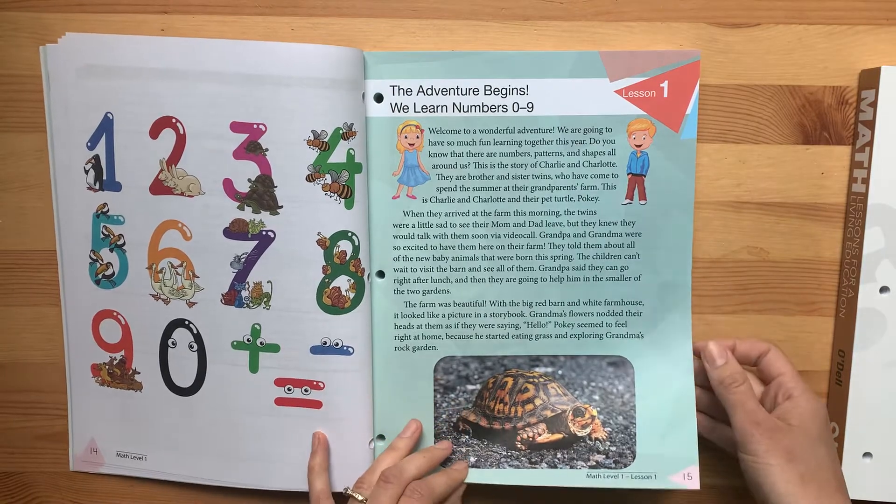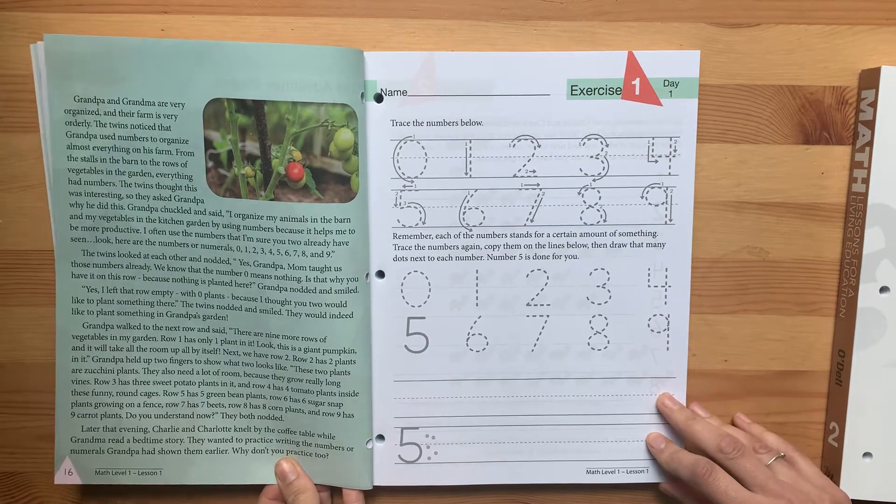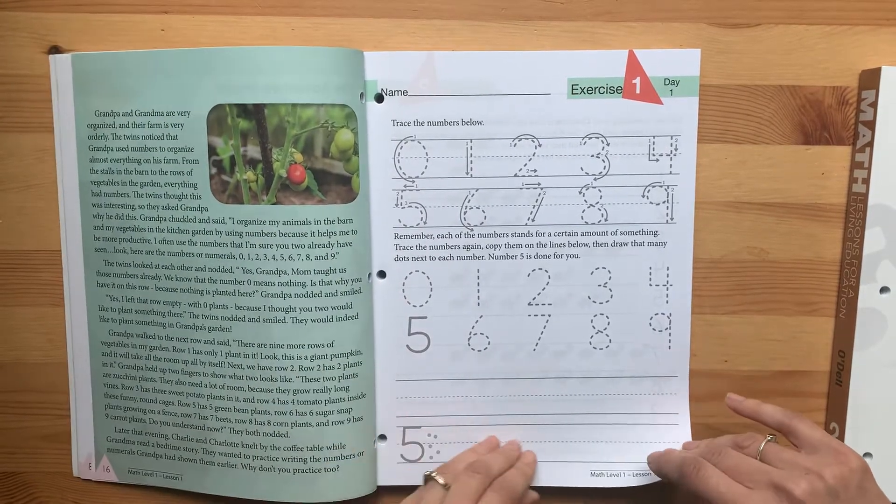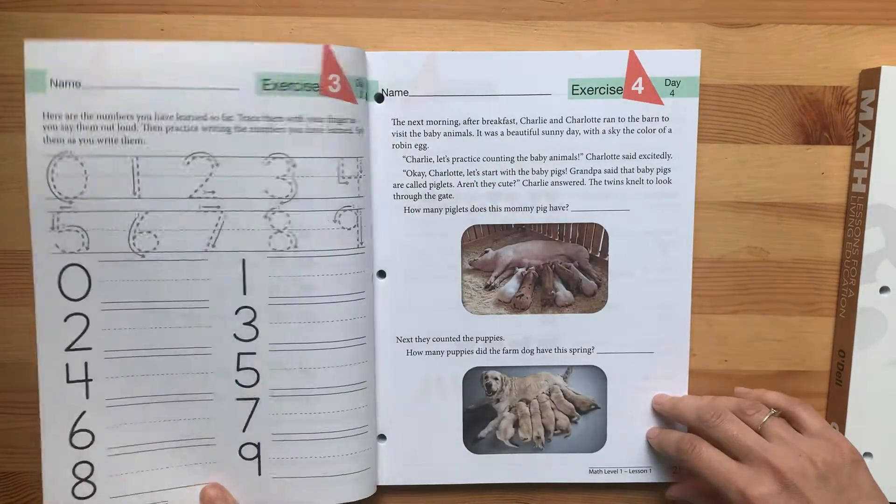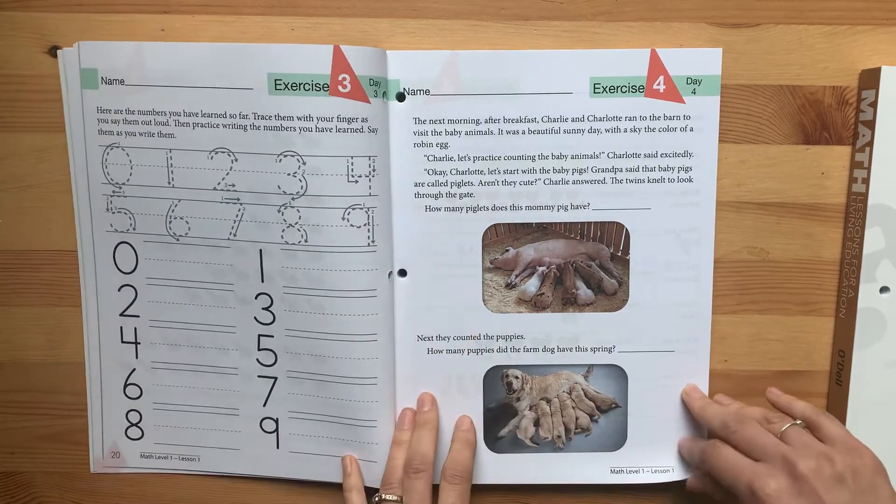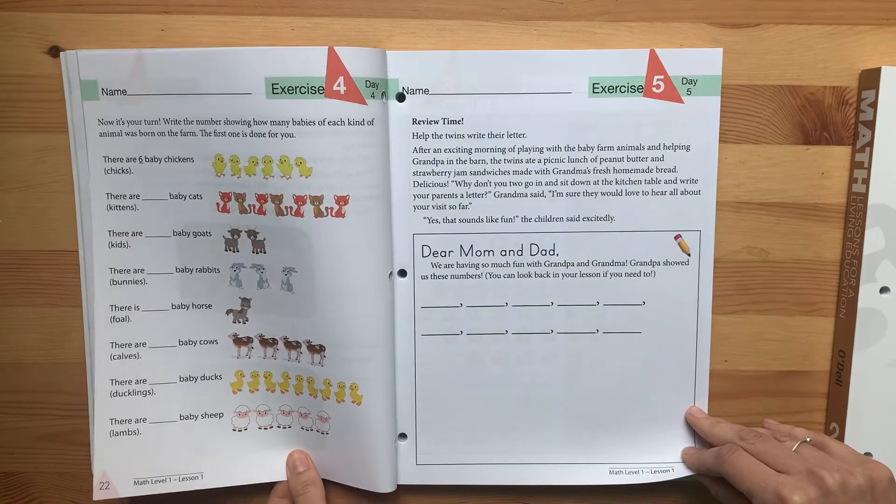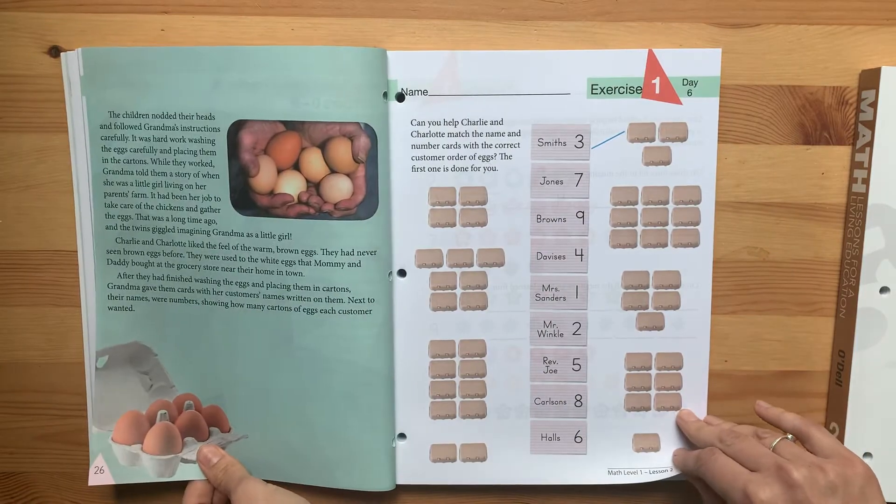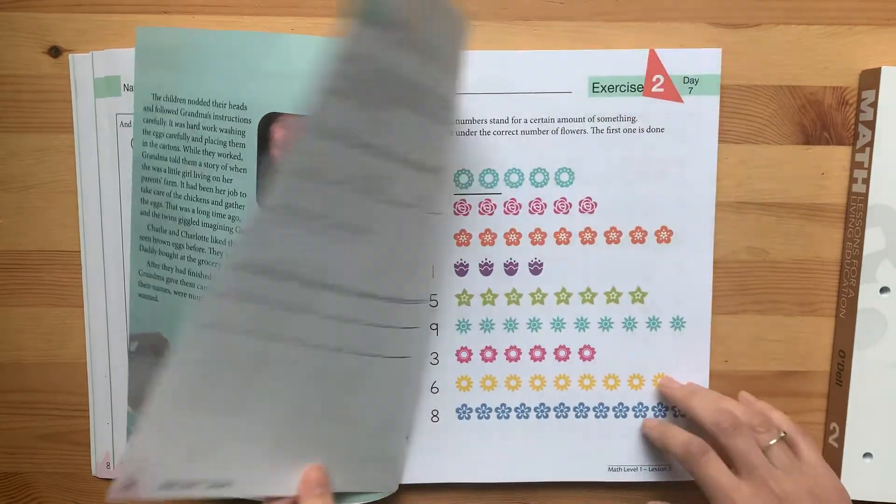Getting started with just flipping through for you. Every single lesson is going to start with a story. At this age, they probably can't read the story on their own, so that would be parent-led. Masterbooks has a lot of tracing involved, which I appreciate. Not all math curriculums are going to have you write out the numbers as much as Masterbooks does. Every day is going to have about two to three pages. You'll have a story and then some kind of exercise to work through.